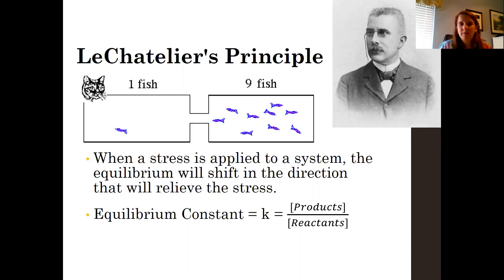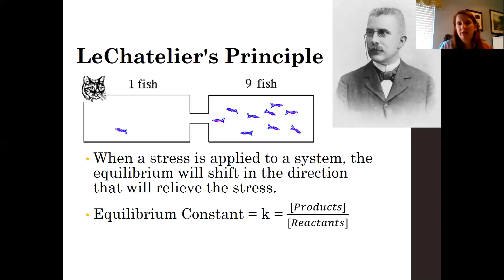The equilibrium constant, very generically, is the concentration of your products over the concentration of your reactants — it's always products over reactants. When the forward reaction rate is favored, you have more products, so your K value will be large because the concentration of the product is greater than the concentration of the reactants. If the reverse reaction is favored, the concentration of the products is low and the concentration of the reactants is high, so your K value would be small.